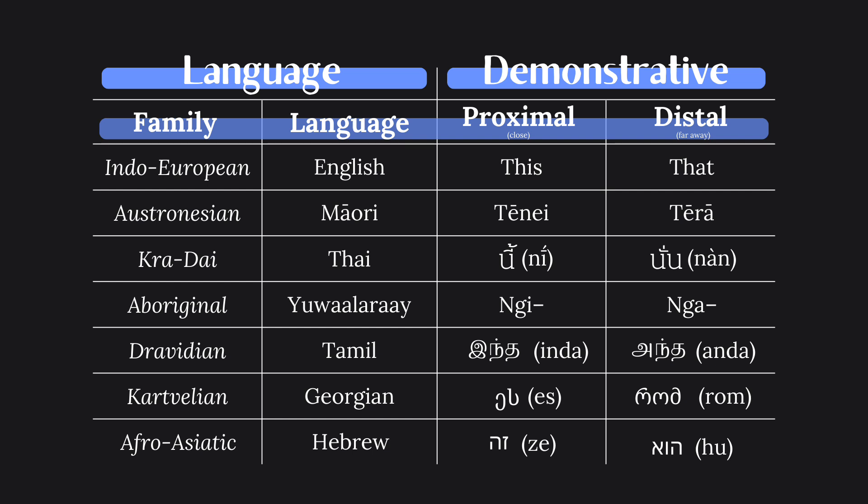This, that, tene, tira, ni, nan, ni, na, inda, anda, es, rom, ze, hu. Notice how the closer or proximal demonstratives have a vowel around E or I, while the far or distal ones have more open A or farther back U sound?